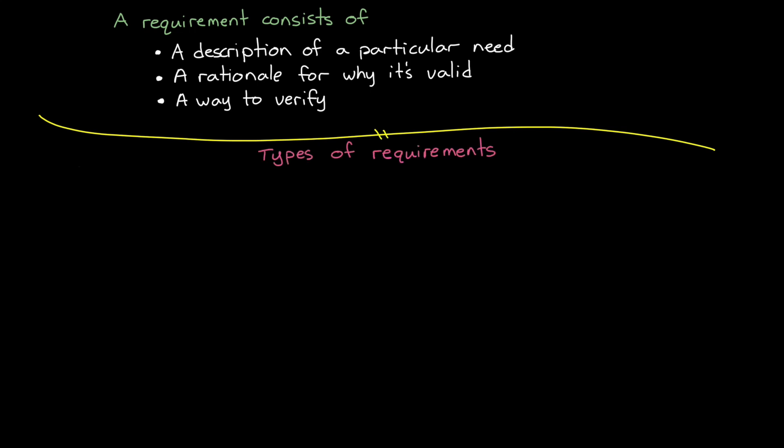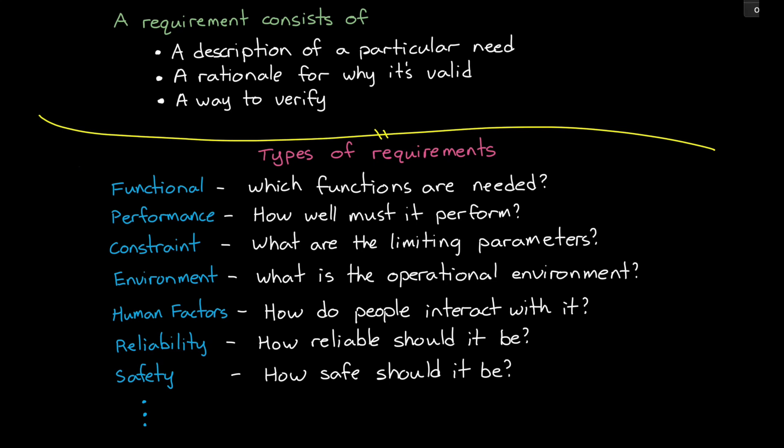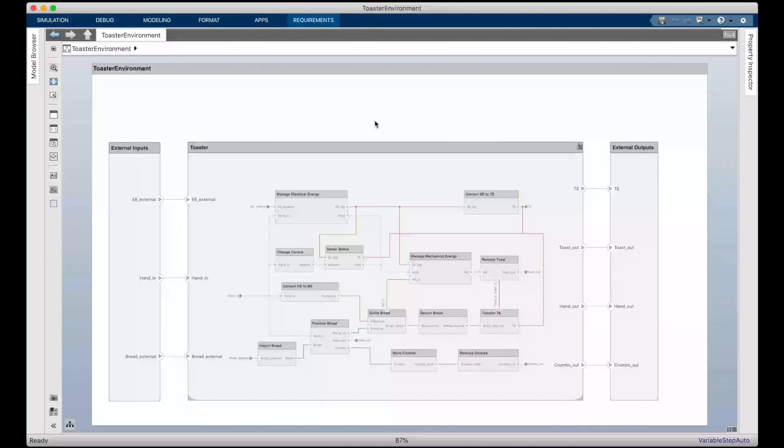But for now, I want to highlight some of the different types of requirements so that you can get a feel for the needs that we may levy on a system throughout the project. First off, we may write requirements that specify which functions the system needs to perform. And then there are performance requirements which describe how well a system must perform a function. And there are constraint requirements that cover which parameters a system shouldn't exceed, and environmental requirements, and human factors, and reliability, and safety, and so on. They cover every aspect of the design where you have specific needs that must be met. So let's go through a few examples with the toaster that we introduced in the last video to show you some of the different types of requirements in action.